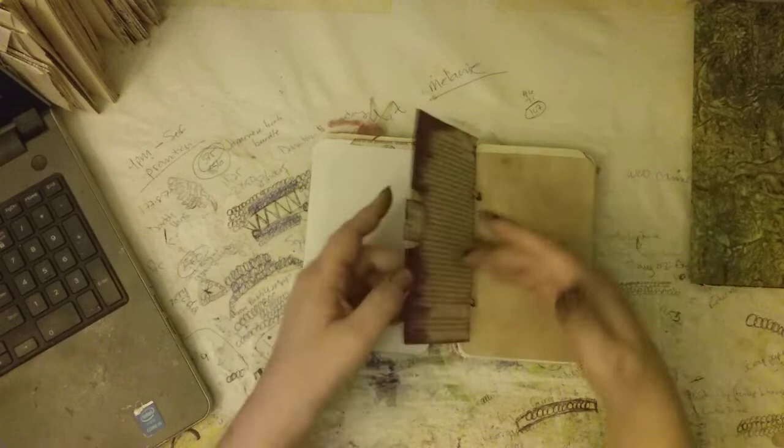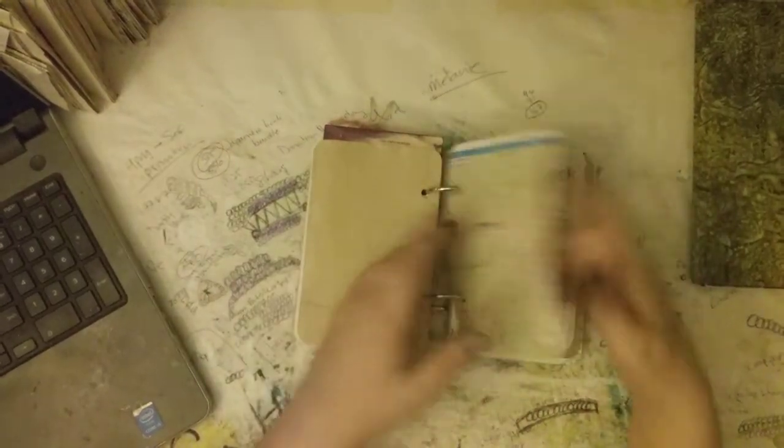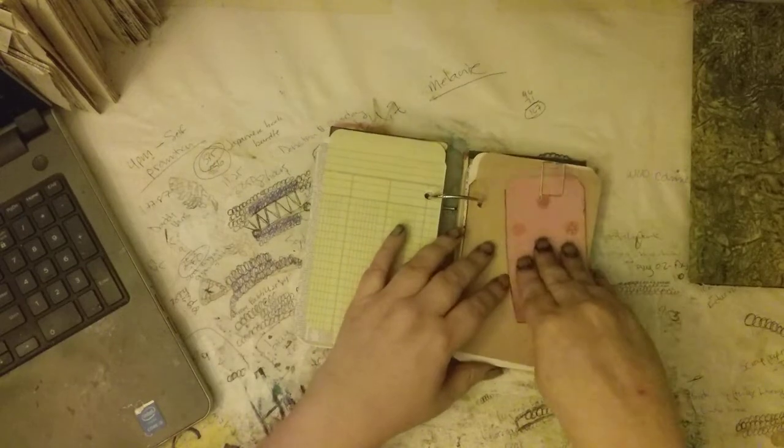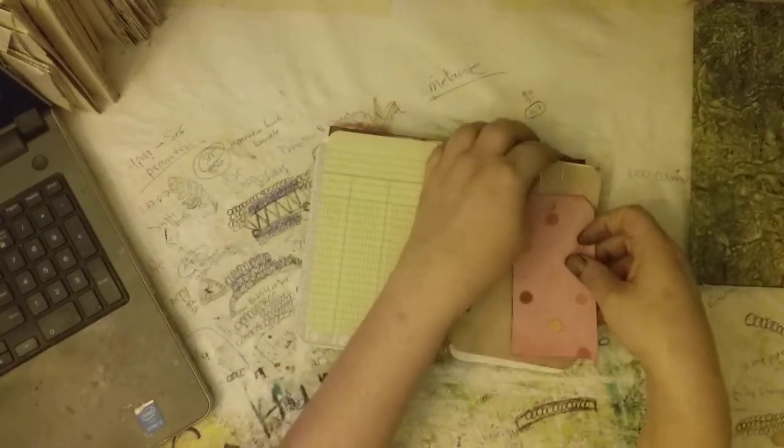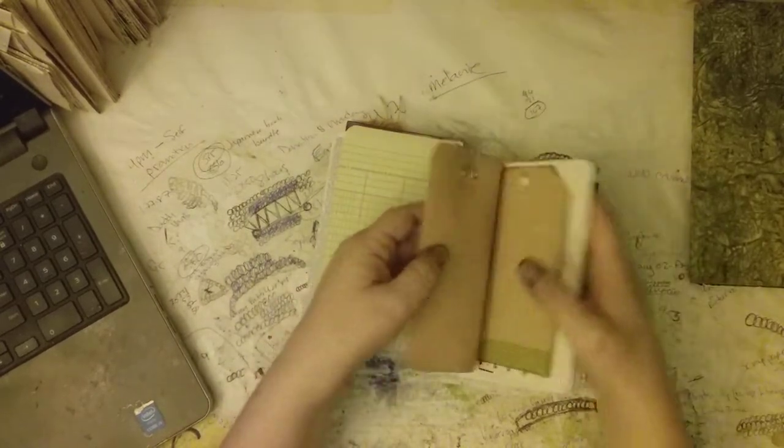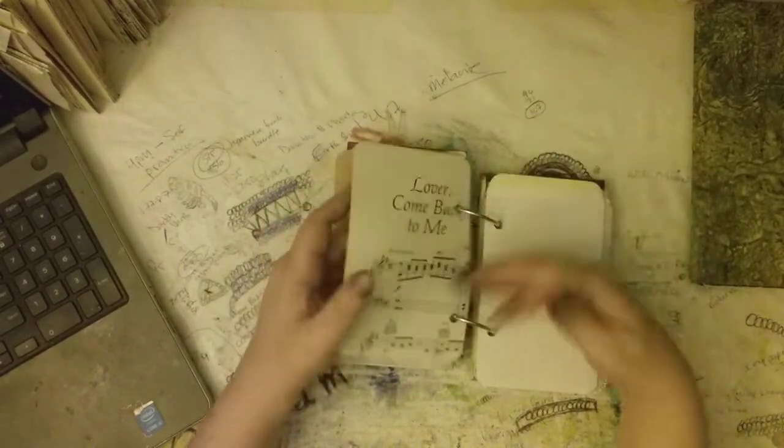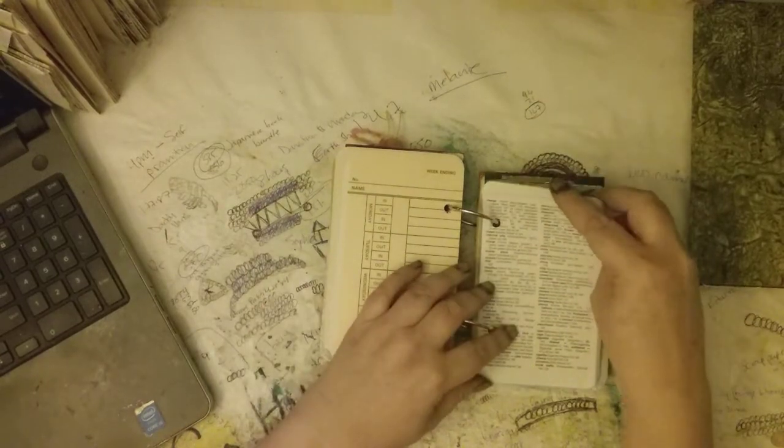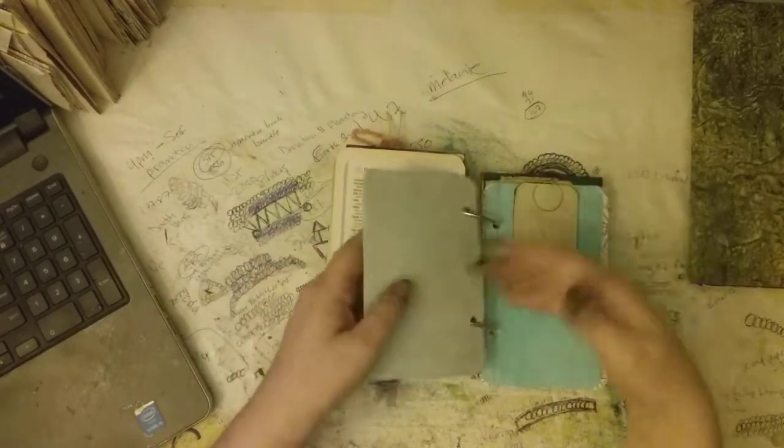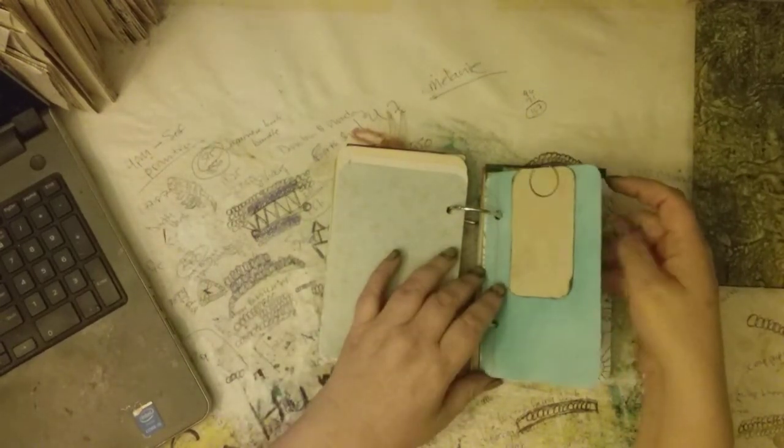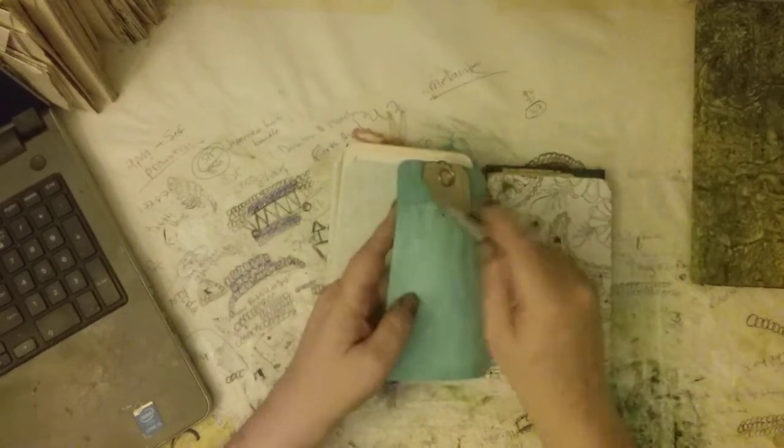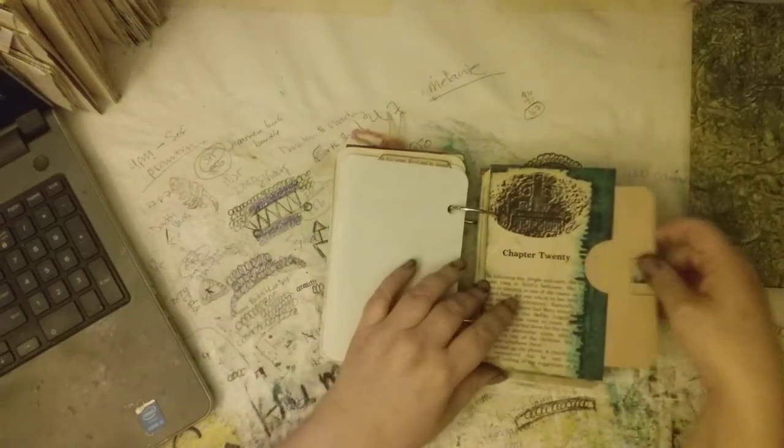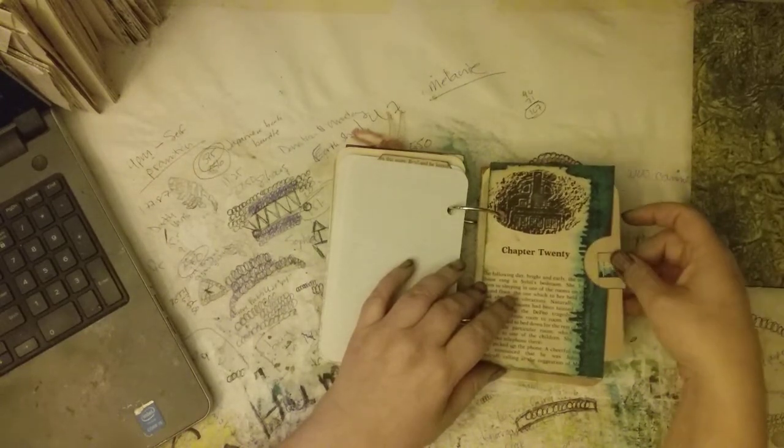Vintage map, and then this coffee-dyed page has an extra tag on it just for fun. Foreign language dictionary page, there's another scrapbooking paper. Here is a blue-dyed index card with some graph paper for extra journaling space.